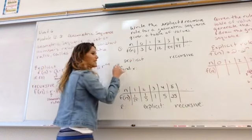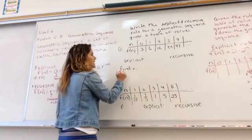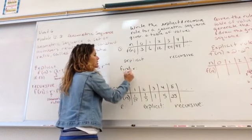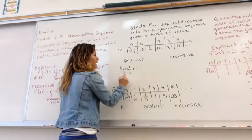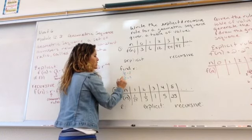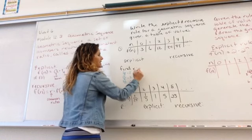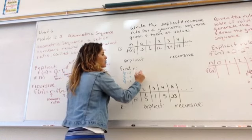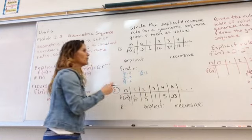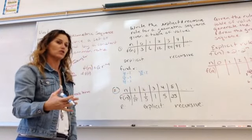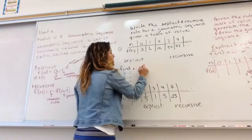We simply take each term. Instead of subtracting them, we're going to divide. So 6 divided by 3 is 2. 12 divided by 6 is 2. 24 divided by 12 is 2. 48 divided by 24 is 2. So the number that keeps reappearing each time is 2. That means r is 2.